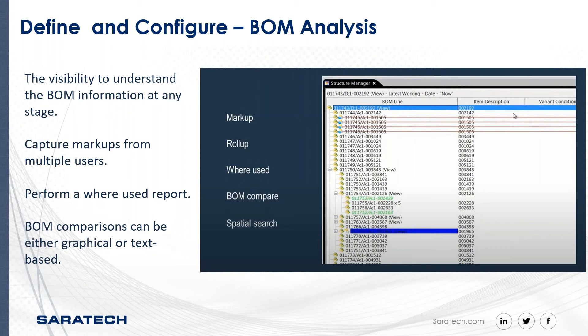We can also perform a where-used report — very powerful to help clearly understand the impact of a change to a specific part or product. BOM comparisons can be either graphical or text-based. They will help you understand how you got there, where you are, and help identify where you need to go.